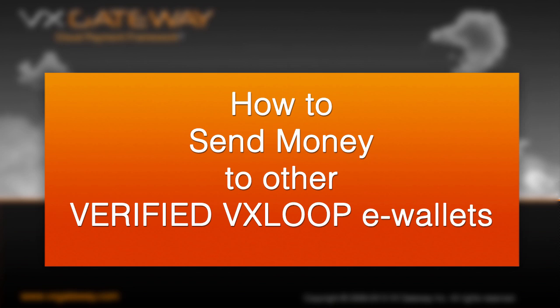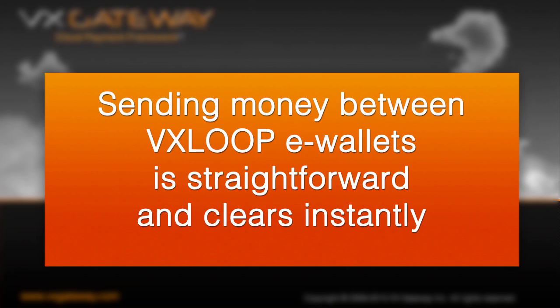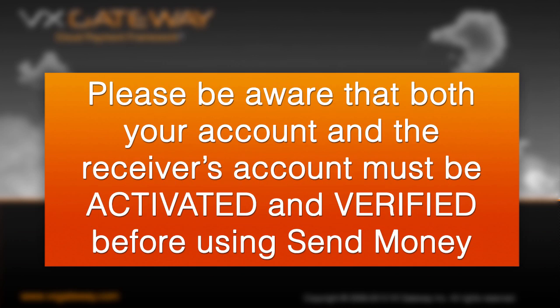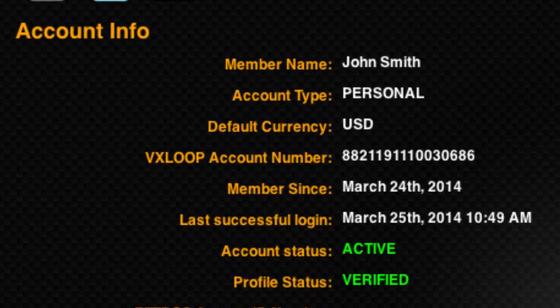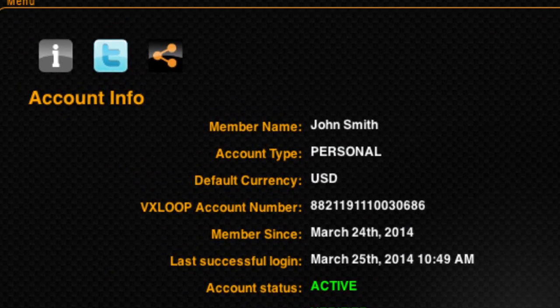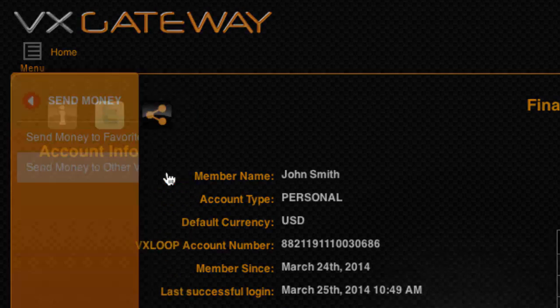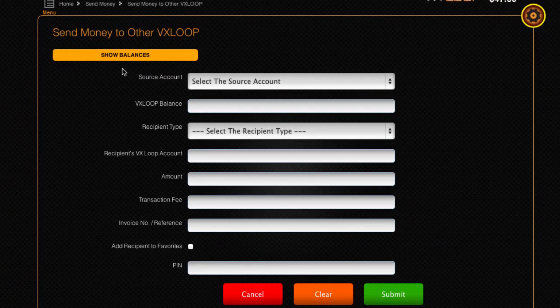Now let's take a look at sending money between VxLoop e-wallets. Sending money between VxLoop e-wallets is straightforward and clears instantly. Please be aware that transactions between VxLoop accounts cannot be reversed, as settlement occurs in real time. Both your account and the receiver's account must be activated and verified before using Send Money. Within the menu, select Send Money, then select Send Money to Other VxLoop to load a new send money form.